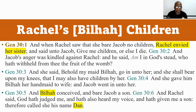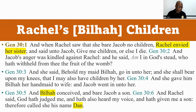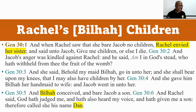And Jacob went in unto her, and Bilhah conceived and bore Jacob a son. And Rachel said, 'God had judged me, and had also heard my voice, and had given me a son,' and she called his name Dan. You could discuss whether Rachel's commentary carries substance — she said this boy is hers, that God heard her voice and had judged her, saying she's not guilty. Her boy is called Dan.